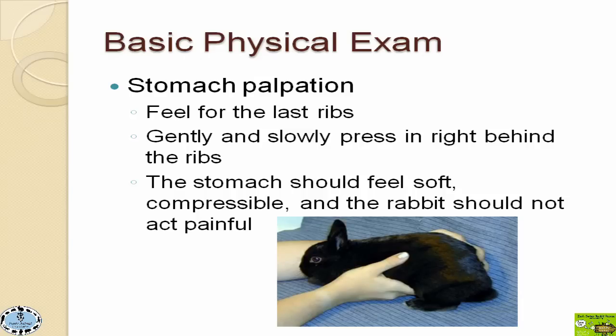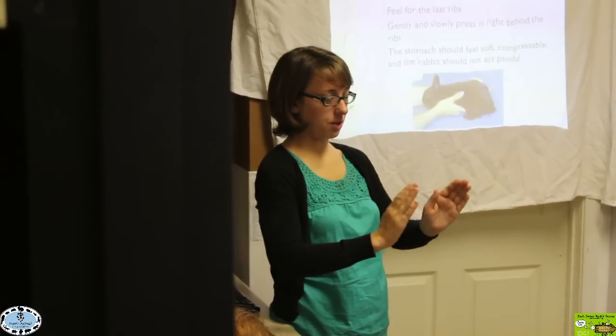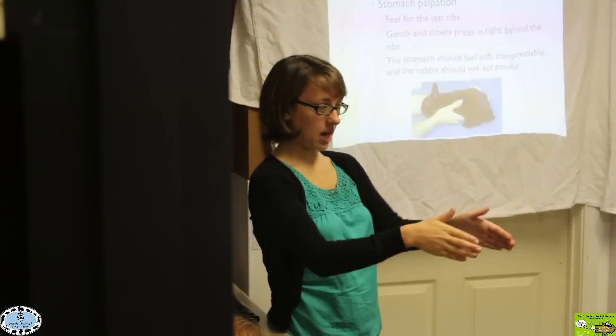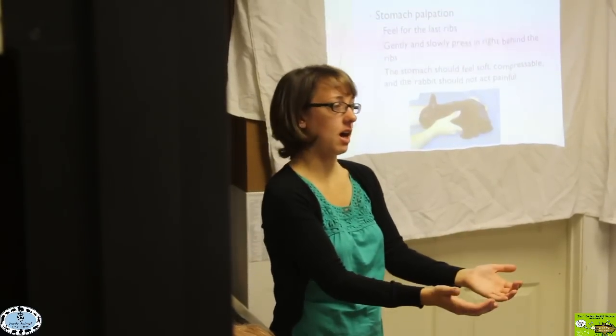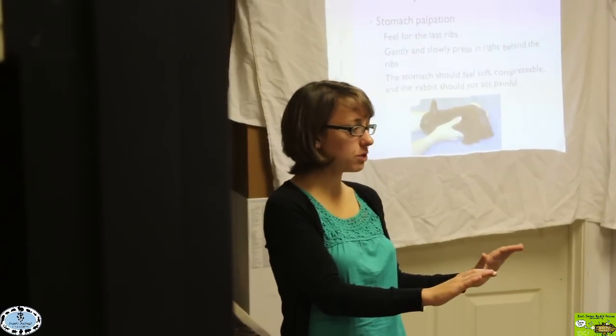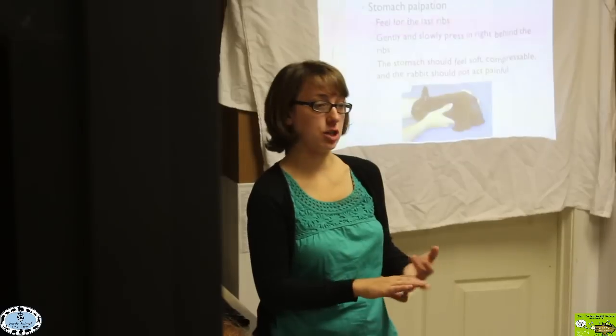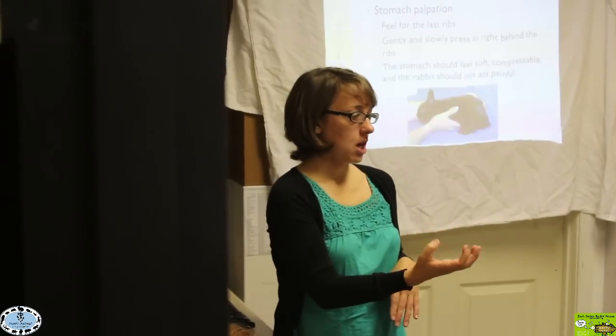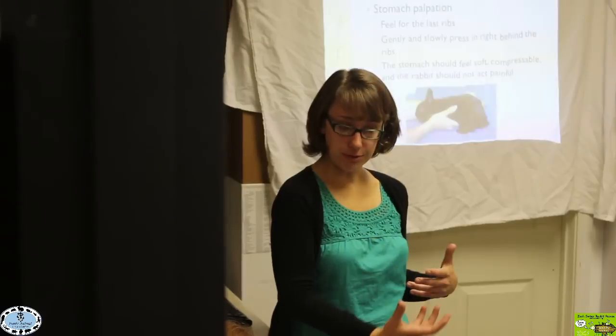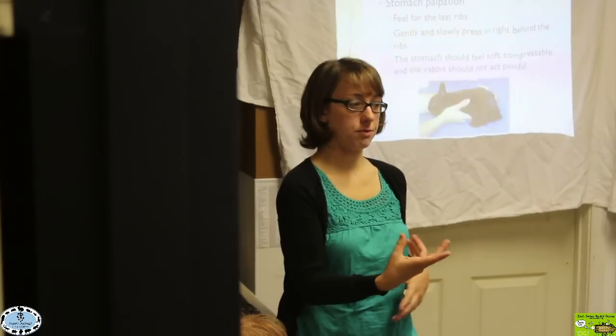I think I have it on the next picture here. When we're feeling for the stomach, what you're going to do is you're going to feel along the side of the body, you're going to feel the ribs of your rabbit. And so you can follow along the ribs of your rabbit until you kind of get to the edge of the ribs. Right behind those ribs, it'll kind of tuck right in. Your stomach is going to be right behind those ribs right there. So what you'll do is you kind of gently and slowly press right in that region. The stomach should feel nice and soft. It should be nice and compressible. You should basically be able to kind of gently feel it and squish it down a little bit.